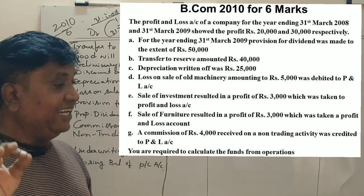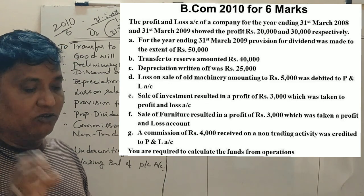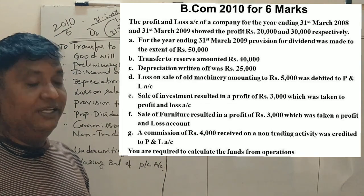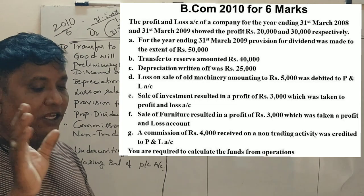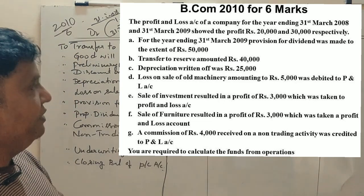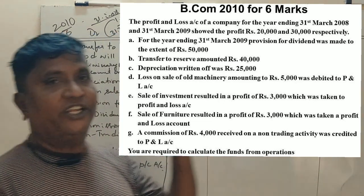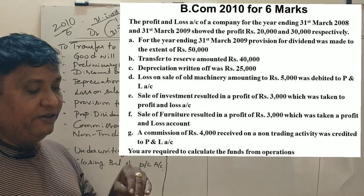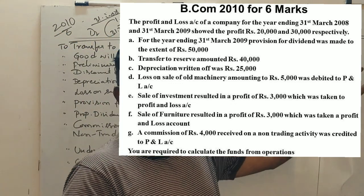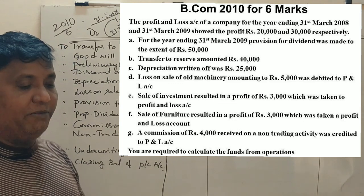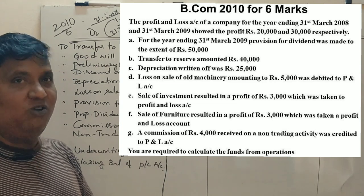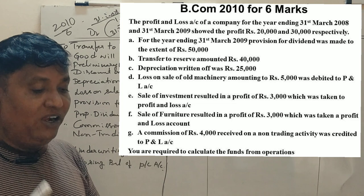The loss on sale of machinery amounting to Rs. 5,000 was debited to profit. The sale of investment resulted in a profit of Rs. 3,000 which was taken to profit. Also, a commission of Rs. 4,000 was received on a non-trading activity.